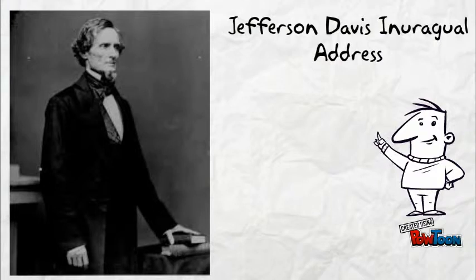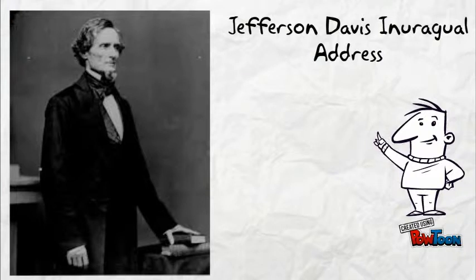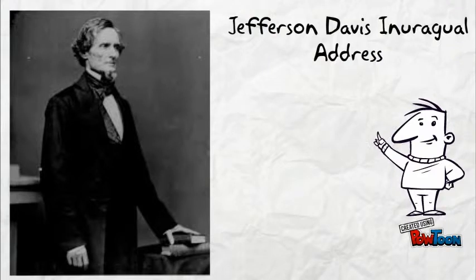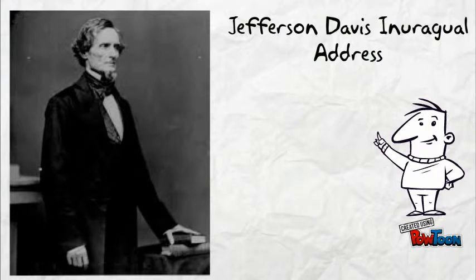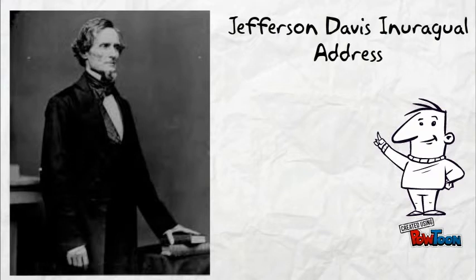Excerpt from the Inaugural Address of Jefferson Davis, President of the Confederate States of America: "I enter upon the duties of the office to which I have been chosen with the hope that the beginning of our career as a Confederacy may not be obstructed by hostile opposition to our enjoyment of the separate existence and independence which we have asserted, and with the blessings of Providence intend to maintain. Our present condition, achieved in a manner unprecedented in the history of nations, illustrates the American ideal that governments rest upon the consent of the governed, and that it is the right of the people to alter or abolish governments whenever they become destructive to the ends for which they were established."